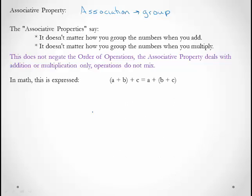In math, we express it as (a + b) + c. So this would be a group. Or we can have a and add the group (b + c) first. No matter how we do this, we're going to get the same answer. Likewise, if I group a and b together with multiplication — so I multiply a and b first and then multiply by c — that doesn't matter. It won't change the answer if I say a × (b × c) and multiply that first.